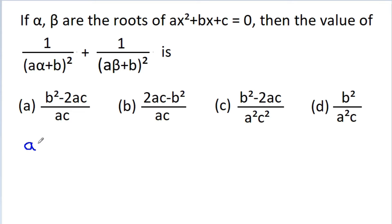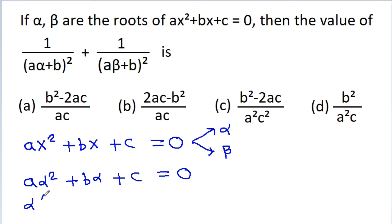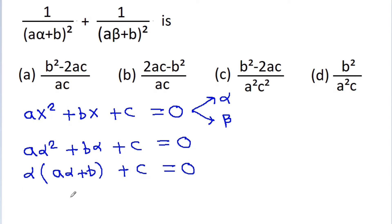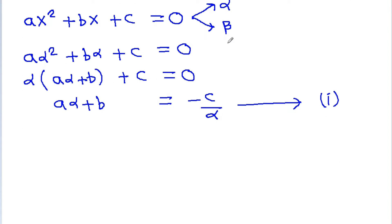The given equation is ax² + bx + c = 0 and the roots are α and β. Since α is a root, it must satisfy the equation, so aα² + bα + c = 0. Taking α common, we get aα + b = -c/α — call this equation 1. Similarly, since β is also a root, aβ + b = -c/β — call this equation 2.